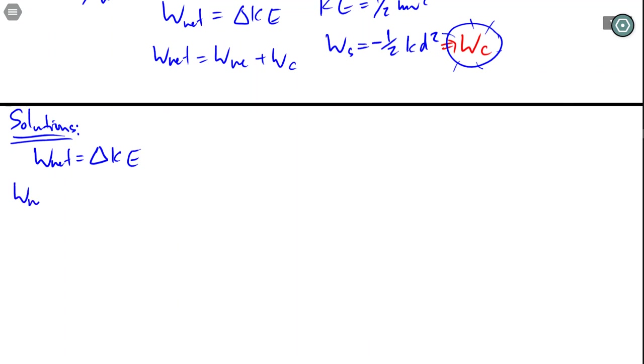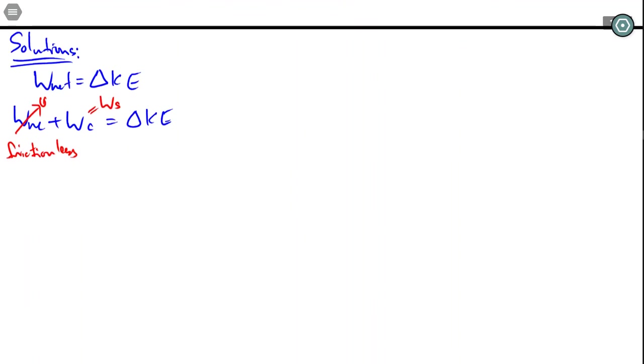And so I'm going to split network to this. I don't actually have to but watch what happens here. There actually is no work done by friction, that's the word frictionless. And this is actually work done by the spring so my formula becomes this.